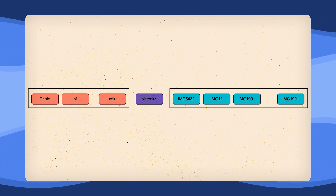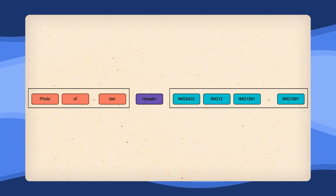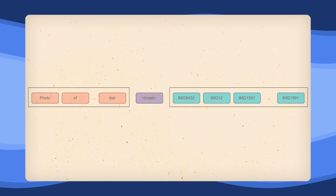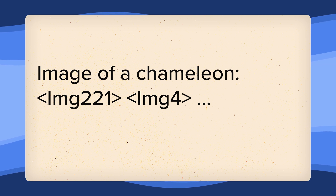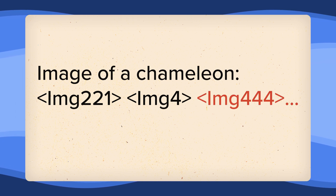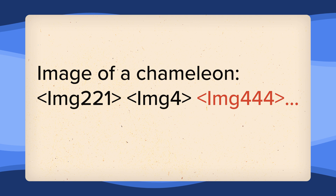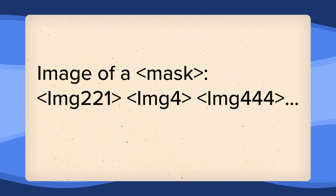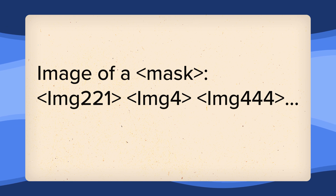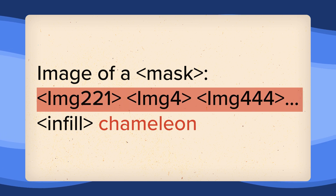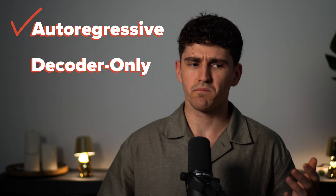Once we reach another break or end-of-sequence token, the image decoder can take over and generate the image. When it comes to training data, the model can handle multimodal cases such as an image of a chameleon followed by the image tokens, where the model is simply trained on the standard next-token prediction loss. But this also means the model can handle image captioning tasks by simply reformatting the same example to mask a certain part and expect the model to predict the masked part after the infill request. In other words, the model sees the image and has to predict what the image contains. So our model can now generate both images and text — autoregressive: check. Decoder-only: check.